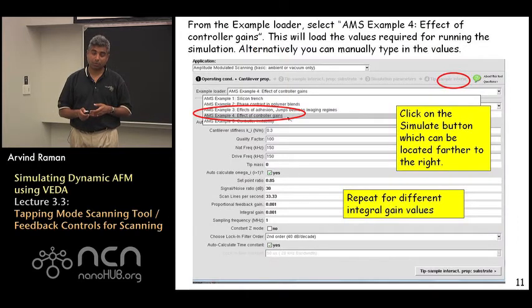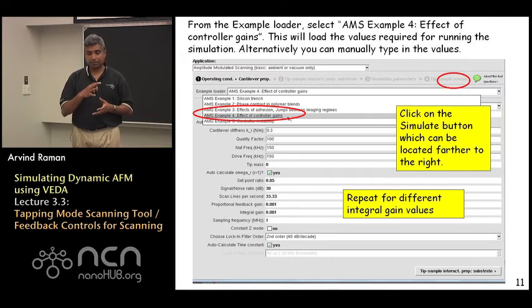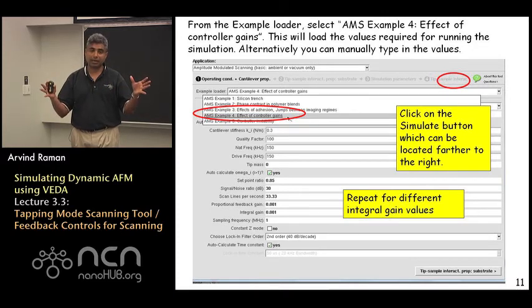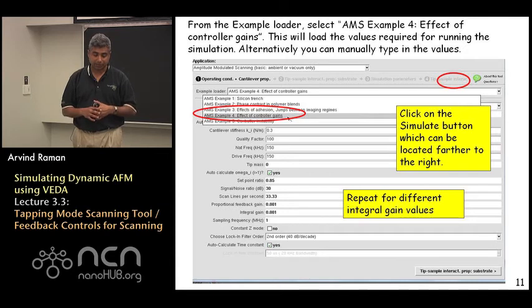So in order to do this one goes through AMS example four. It is a preloaded example that you can do and all these parameters for the feature and substrate are already in there.